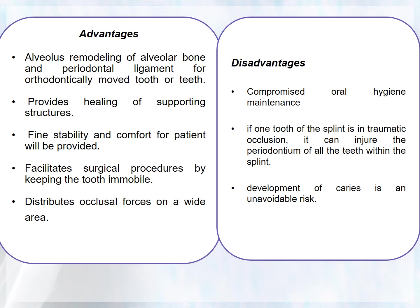The advantages of splinting include: alveolar bone and periodontal ligament remodeling for orthodontically moved teeth, healing of supporting structures, stability and comfort for the patient, facilitation of surgical procedures by keeping the tooth immobile, and distribution of occlusal forces over a wide area. Disadvantages include: compromised oral hygiene maintenance, potential injury to the periodontium of all splinted teeth if one tooth is in traumatic occlusion, and an unavoidable risk of caries development.